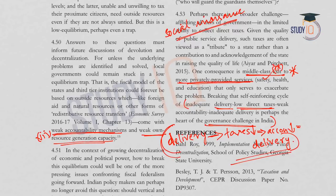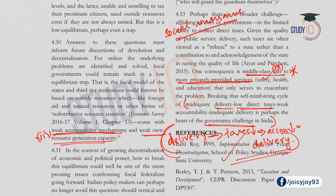These points are very important — please keep in mind the reasons for underperformance of rural and urban local governments, as they are useful for objective questions and descriptive essays. The PDF of this lecture is available on the Facebook page, and the video and YouTube link will also be uploaded there. Thank you.